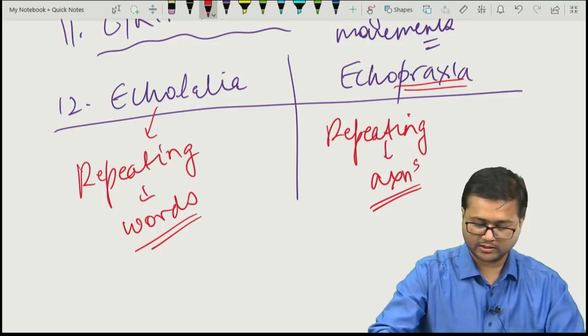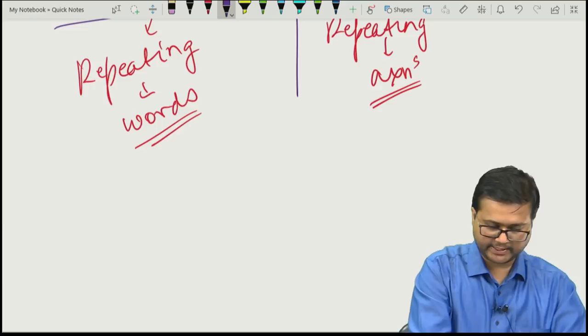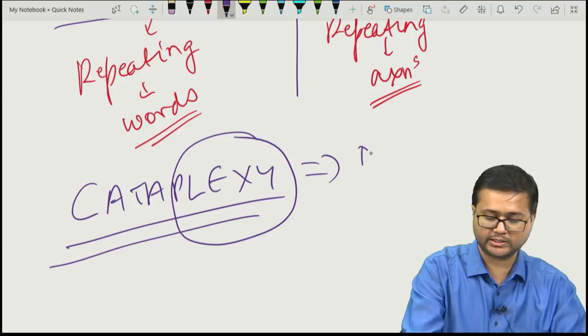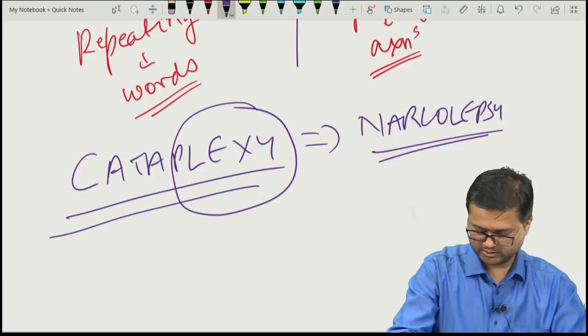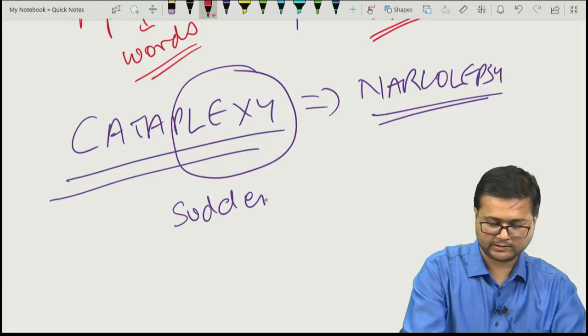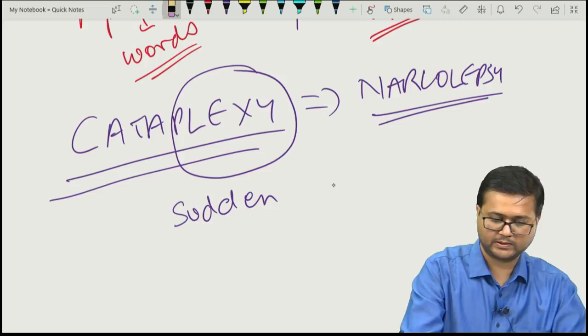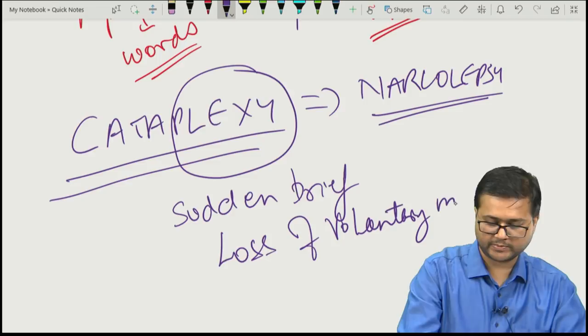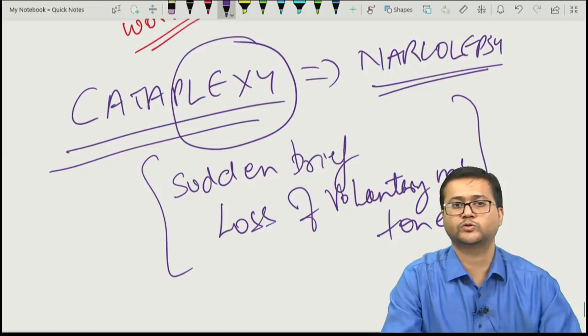Cataplexy — as in the option — is not catalepsy. Cataplexy is a symptom seen in narcolepsy. It is a sudden, brief loss of voluntary muscle tone. This is cataplexy, which is seen in narcolepsy and is not seen in catatonia.